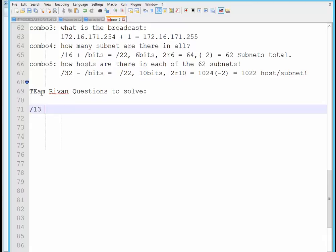Slash 13 would be 255 dot 248 dot zero dot zero. The slash would be second octet 8i. Next would be slash 21. That would be 255.255.248.0, which would be on the third octet 8i.